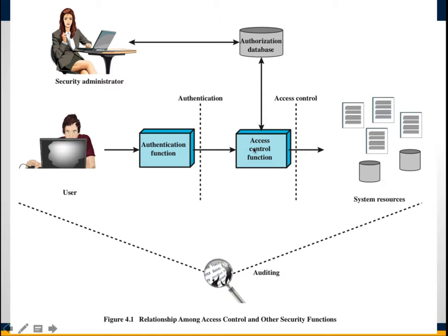In practice, a number of components may share the access control function. All operating systems — Mac, Linux, Unix — have at least a rudimentary, and in many cases quite robust, access control component. Add-on security packages can supplement native access control capabilities, particular applications such as database management systems can incorporate access control functionality, and external devices like firewalls can also provide access control services.